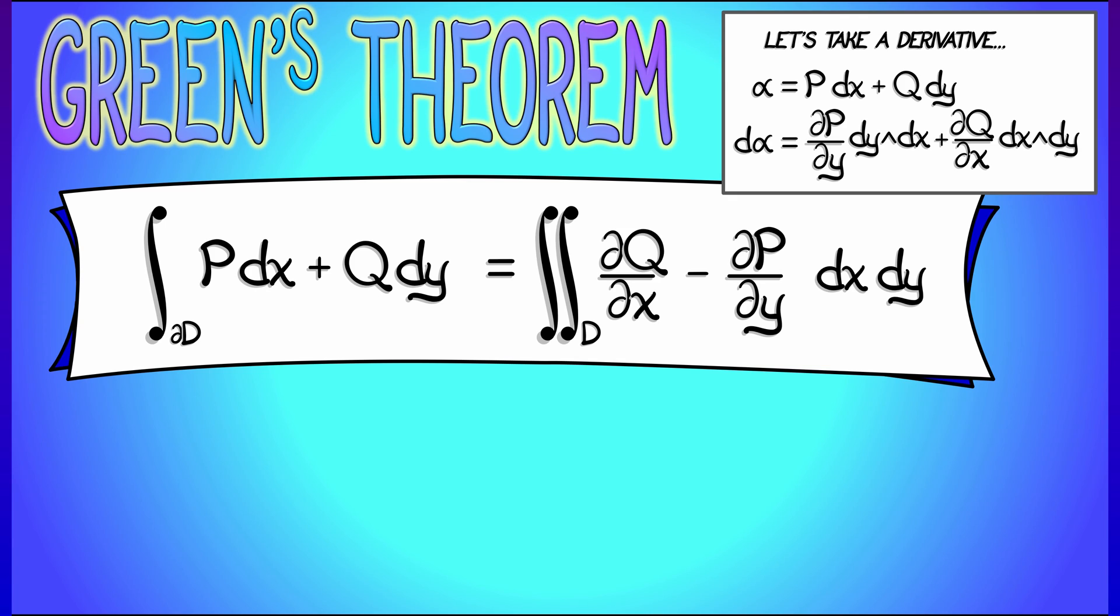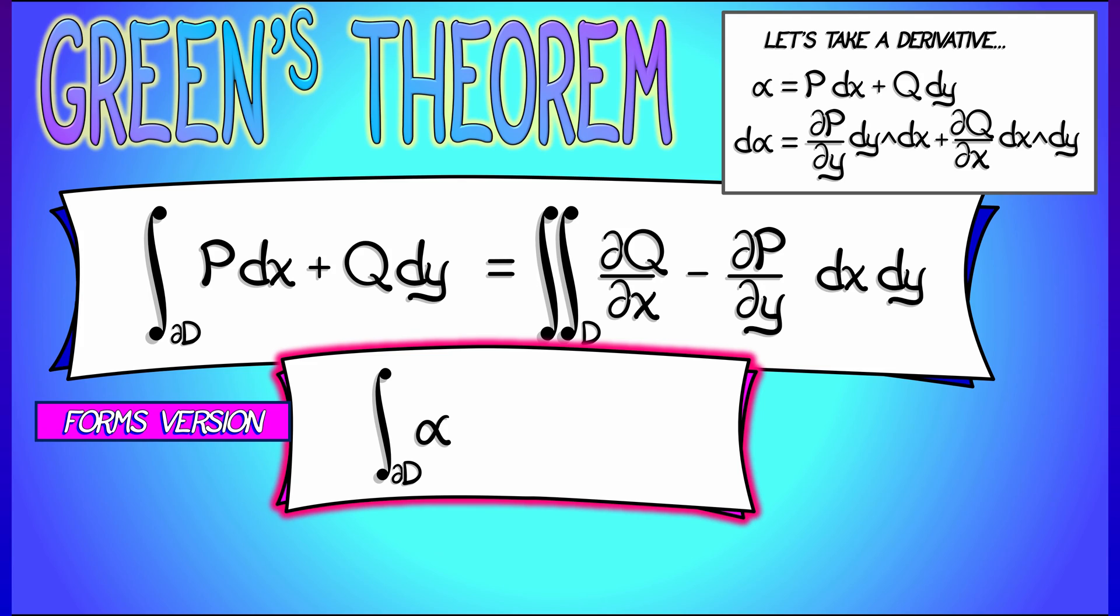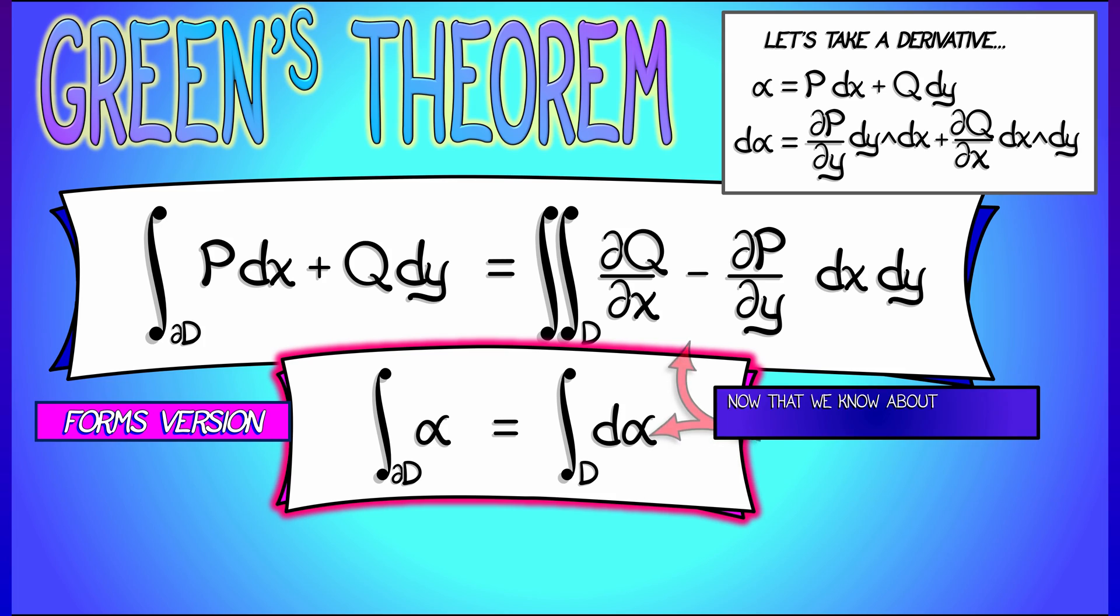And we get a forms version of Green's theorem that says that the integral of a one-form field, alpha, over the boundary of a domain d in the plane is really the integral of its derivative two-form field, d alpha, over the interior. Using this definition that we have of the integral of a two-form field over a region in the plane, in terms of the double integral with respect to area.